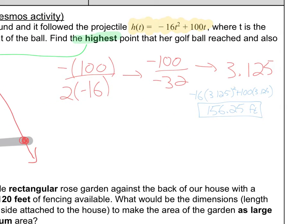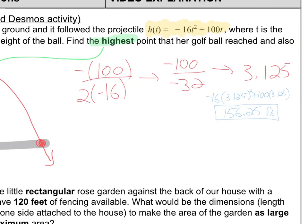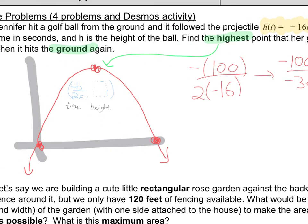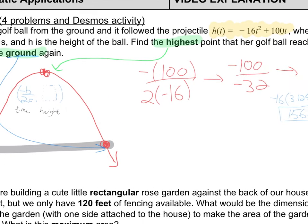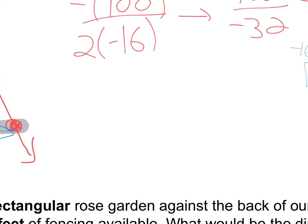So that's the first part of the answer. Second part is when does her ball reach the ground again? So when does the ball reach the ground? Well, it starts off on the ground, but then it also lands back on the ground. So we're finding an x-intercept. We're setting this thing equal to 0. So I've got -16t² + 100t = 0.